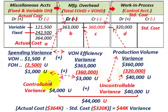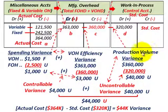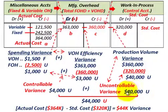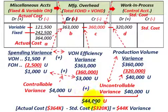That $4,000 is the controllable variance — I want to be clear about that. For the uncontrollable variance, we look at the production volume variance: budgeted fixed plus standard variable of $360,000 minus standard cost $320,000 = $40,000 unfavorable. So controllable variance is $4,000 unfavorable and uncontrollable variance is $40,000 unfavorable, netting to $44,000 total.